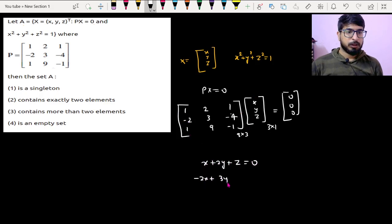Then -2x plus 3y minus 4z equal to 0, and then x plus 9y minus z equal to 0. These three equations I am getting.